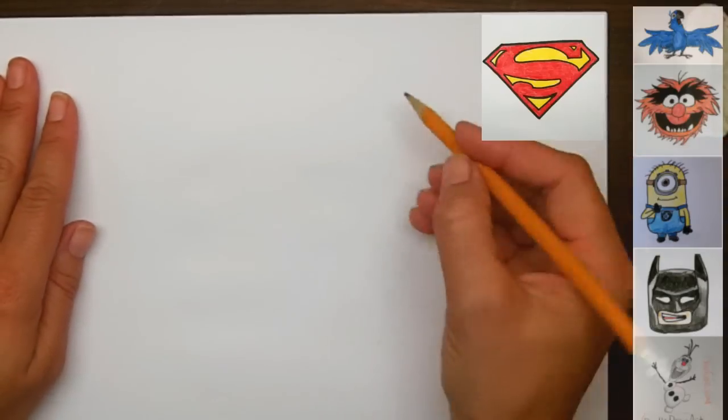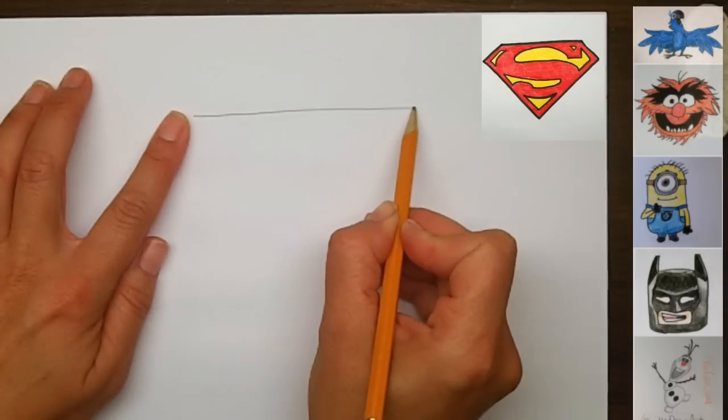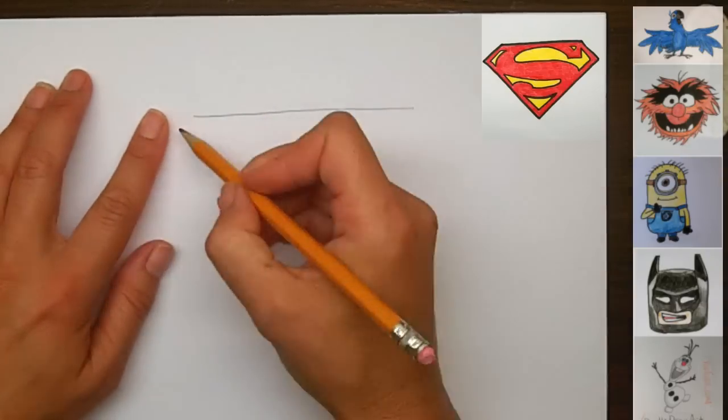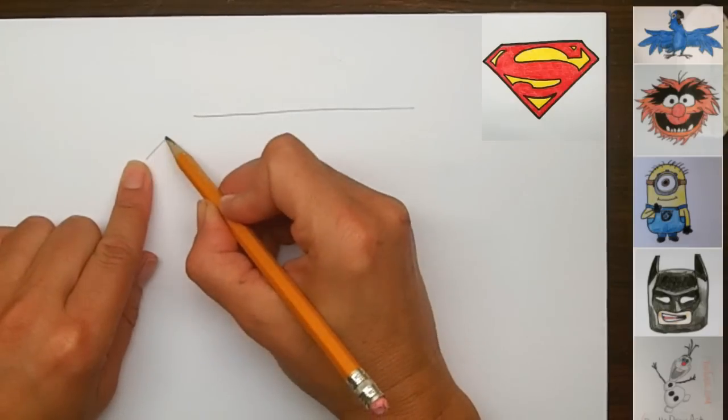We're going to start off by drawing a straight line across the center. And then from this straight line, we're going to draw two angled lines that are coming out to the sides, like this.